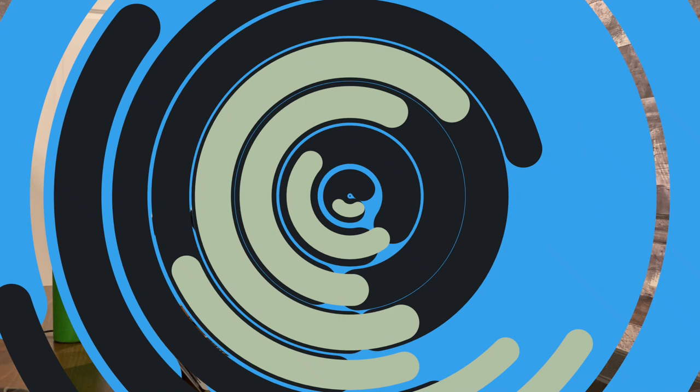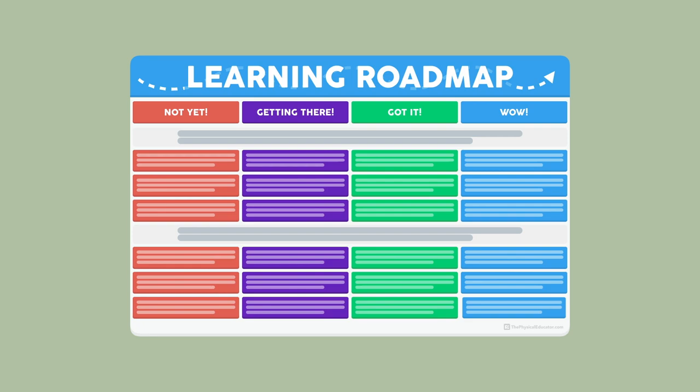Even better is when the teacher breaks the larger learning goal down into smaller observable milestones, creating a natural system where students are invited to check in on their learning regularly, figure out where they're at, and determine what needs to happen next to move their learning forward. In my teaching, I create learning roadmaps — these qualitative rubrics that I share with my students — and they serve exactly that purpose.